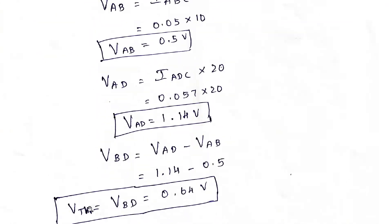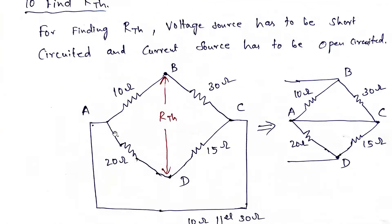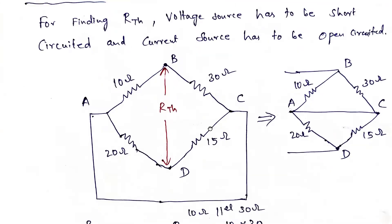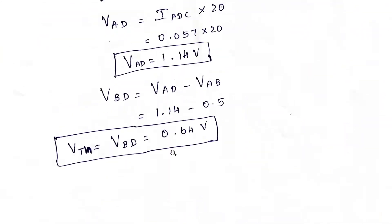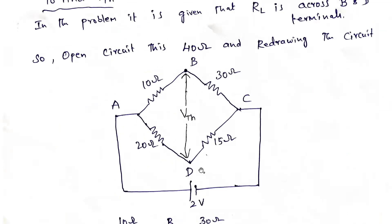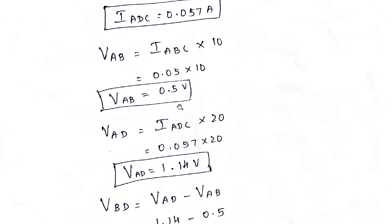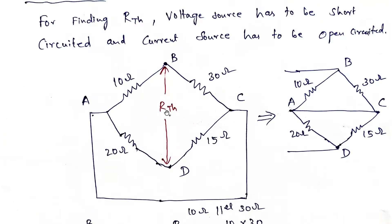Now we find out what is RTH. To find out RTH, the voltage source has to be short-circuited and the current source has to be open-circuited. Here in the circuit, you can see only one voltage source. That voltage source alone we need to short-circuit. So we have redrawn the circuit, short-circuiting the voltage source. A and C are now short-circuited, so I am connecting A and C with a wire.